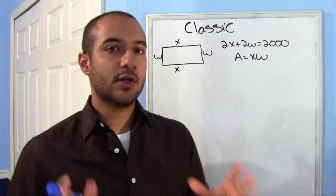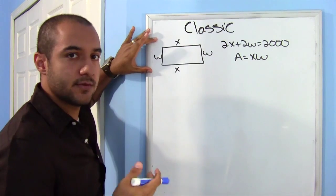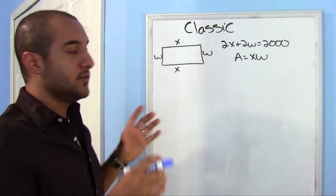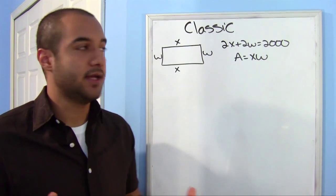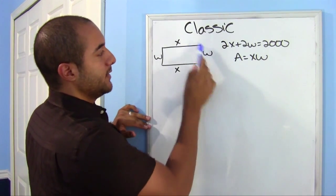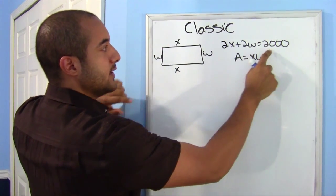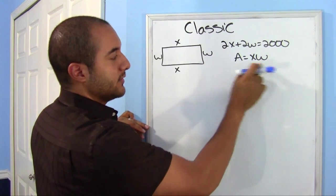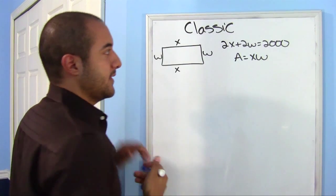All right, here's a very classic problem. Here there's a farmer who has 2,000 feet of fence, and he wants to make a rectangle, and he wants to maximize the area. So here look at the information we have of the perimeter. That's 2x plus 2w, that's equal to 2,000 feet of fencing. And you know the area, you know that it's x times w, and you want to maximize that.